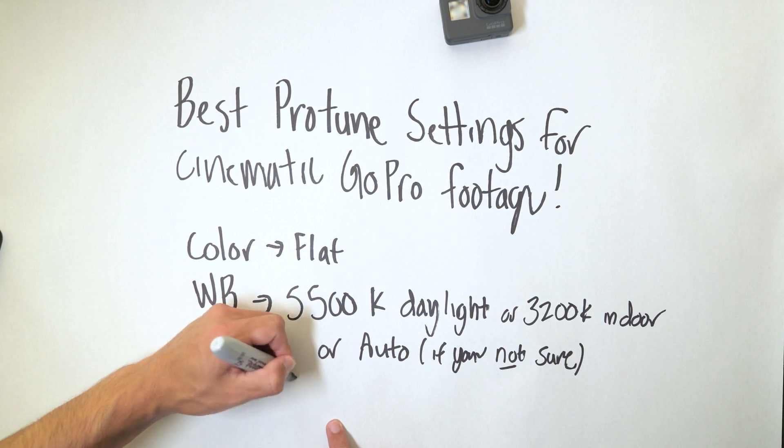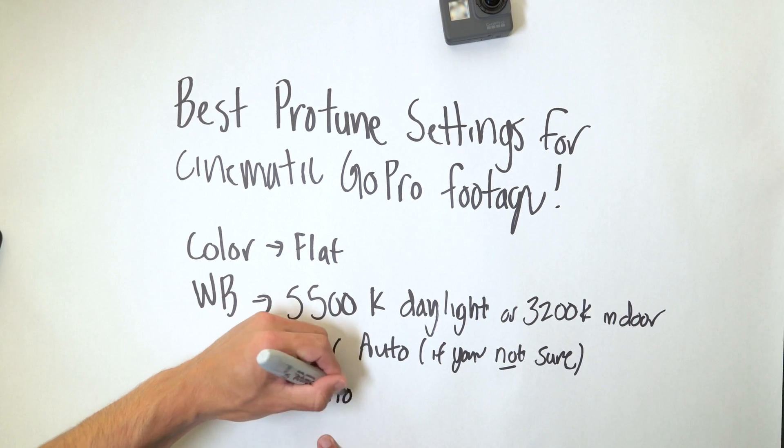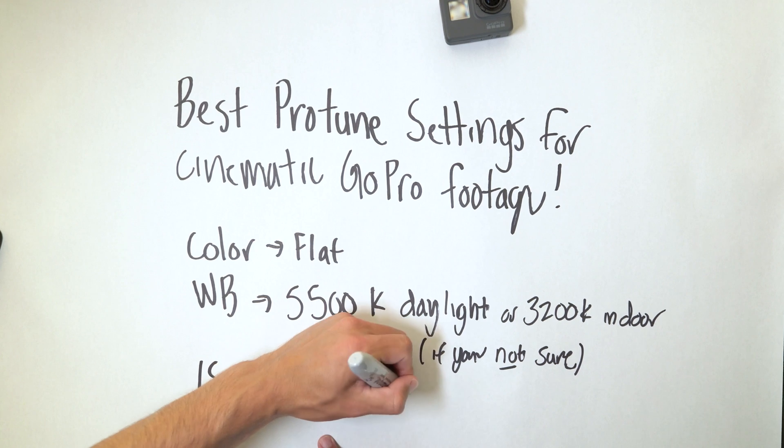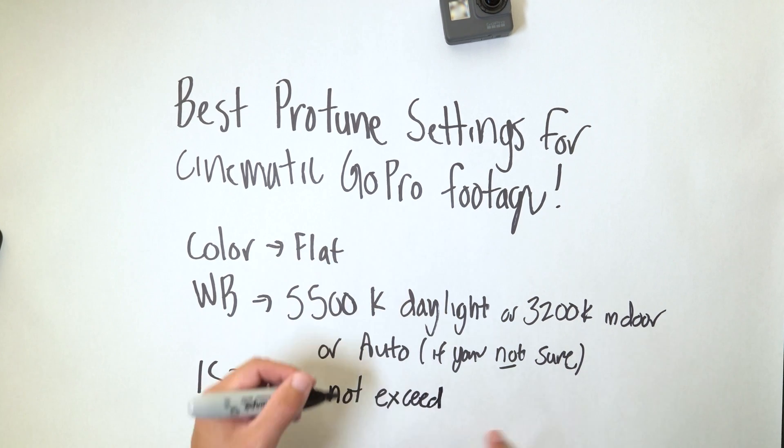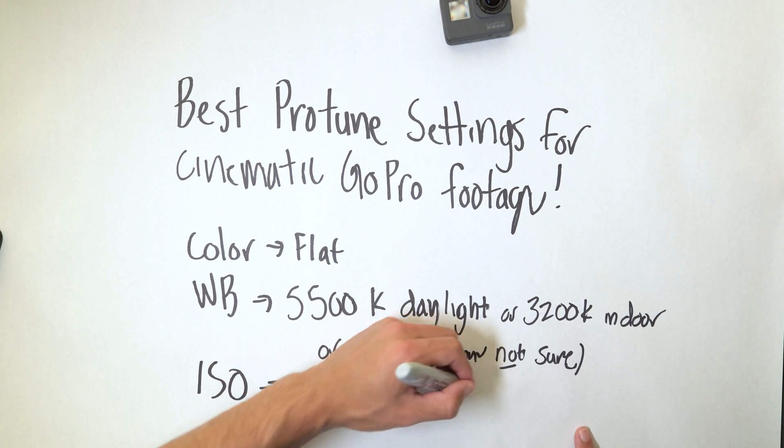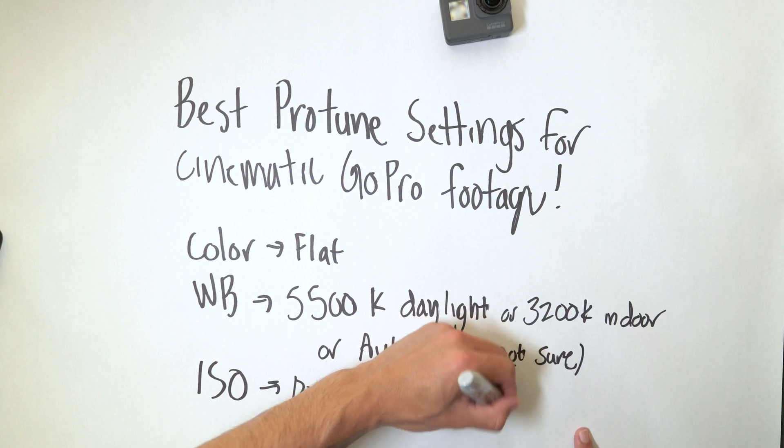For ISO — especially on the GoPro Hero 5, which in my opinion is not as good as the Hero 4 in low light — don't exceed 1000, because the sensor on this camera is really small. It does amazing things, but the sensor is limited and you can't get up to the high ISO numbers like other cameras such as the a7S I'm shooting this video on. I would really try to stay in the range of 400 to 800 ISO if possible.